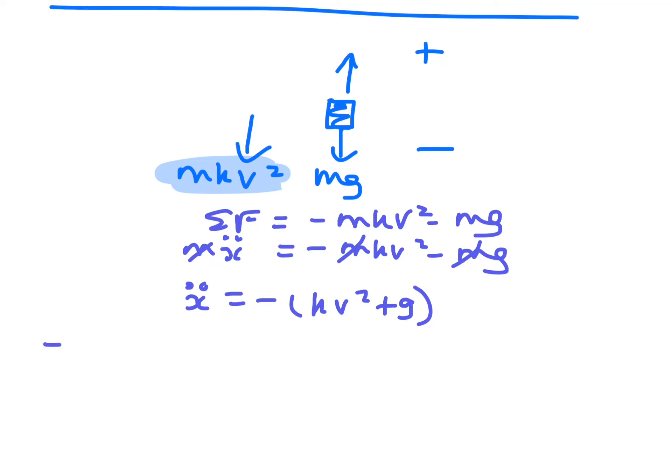So if I'm after the actual max height, then I need to use v dv/dx equals minus kv squared plus g. Collect the v's together, so you get dv over kv squared plus g equals minus dx.